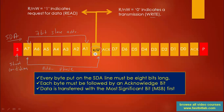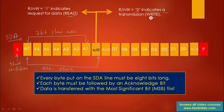If the R/W bit is 0, that indicates that the master is going to write the data, or the master is going to transmit the data. And if this bit is 1, then it indicates that the master is going to read the data from the slave — that is called a read operation. Read means read from the slave; write means write to slave.